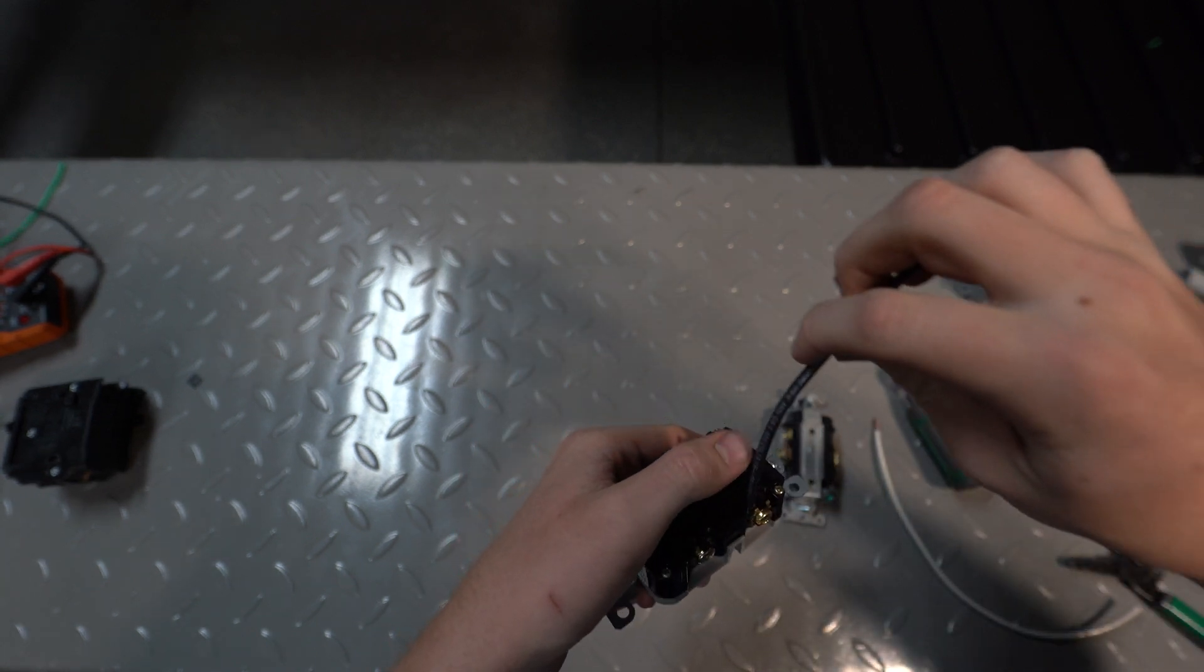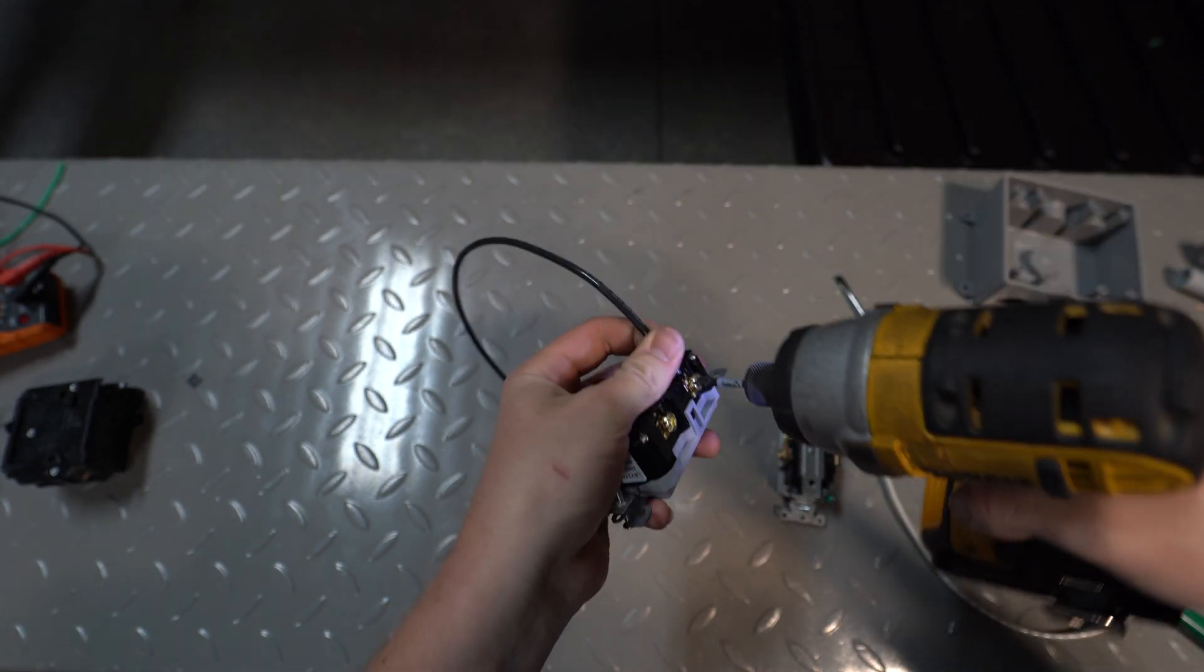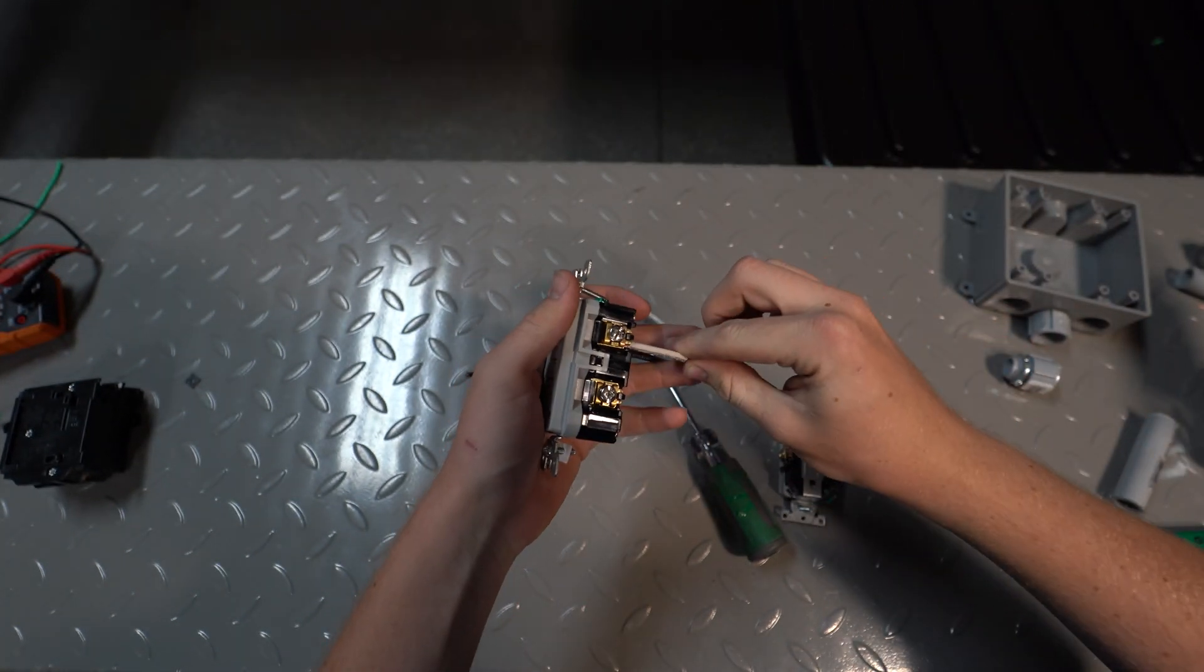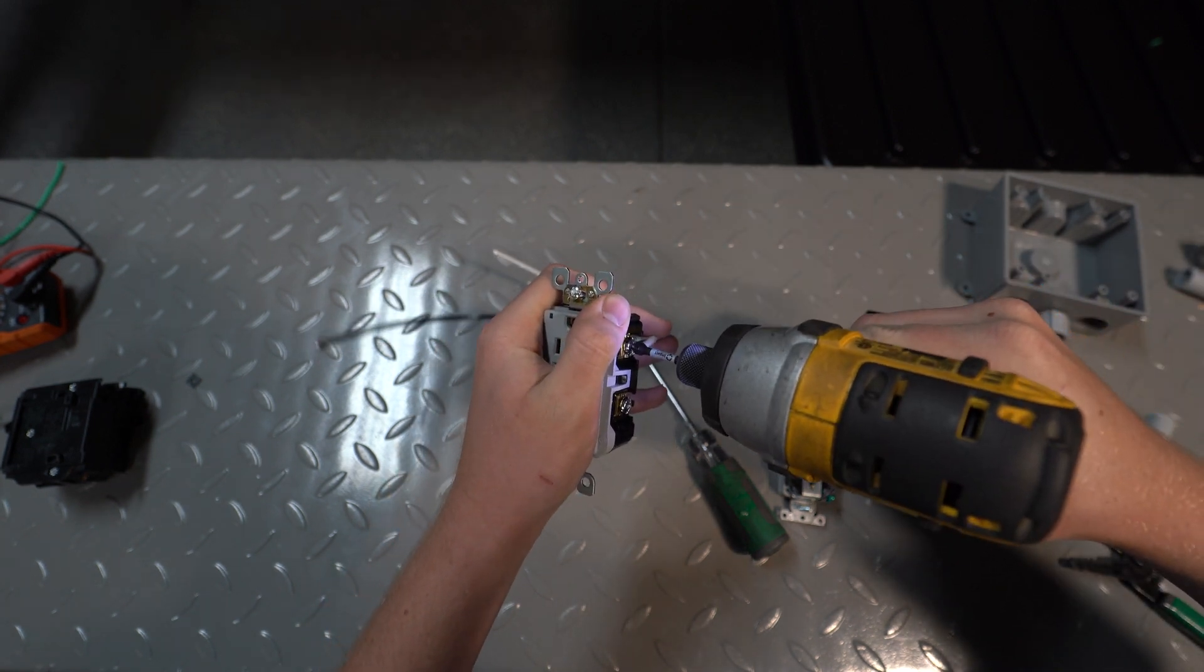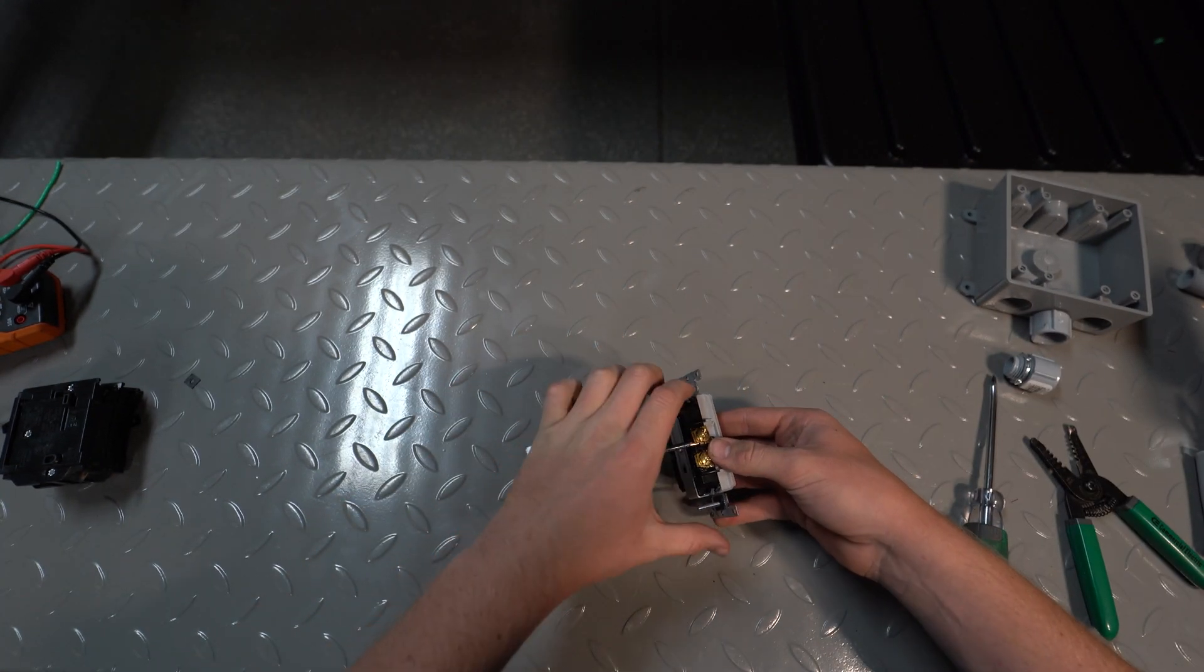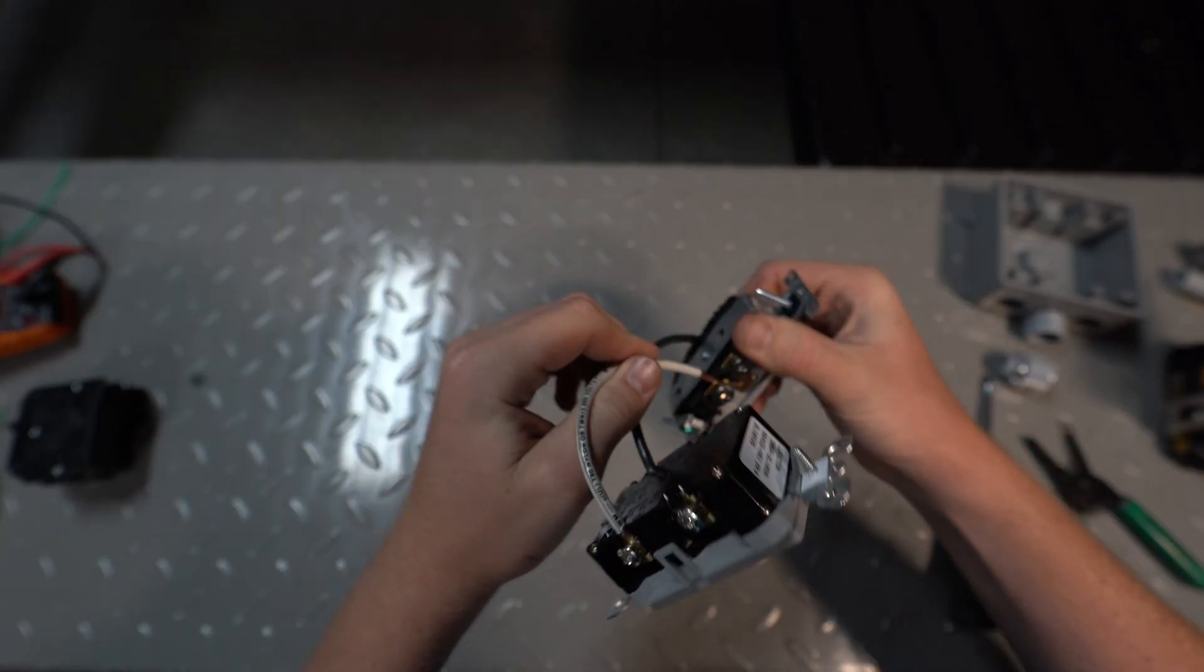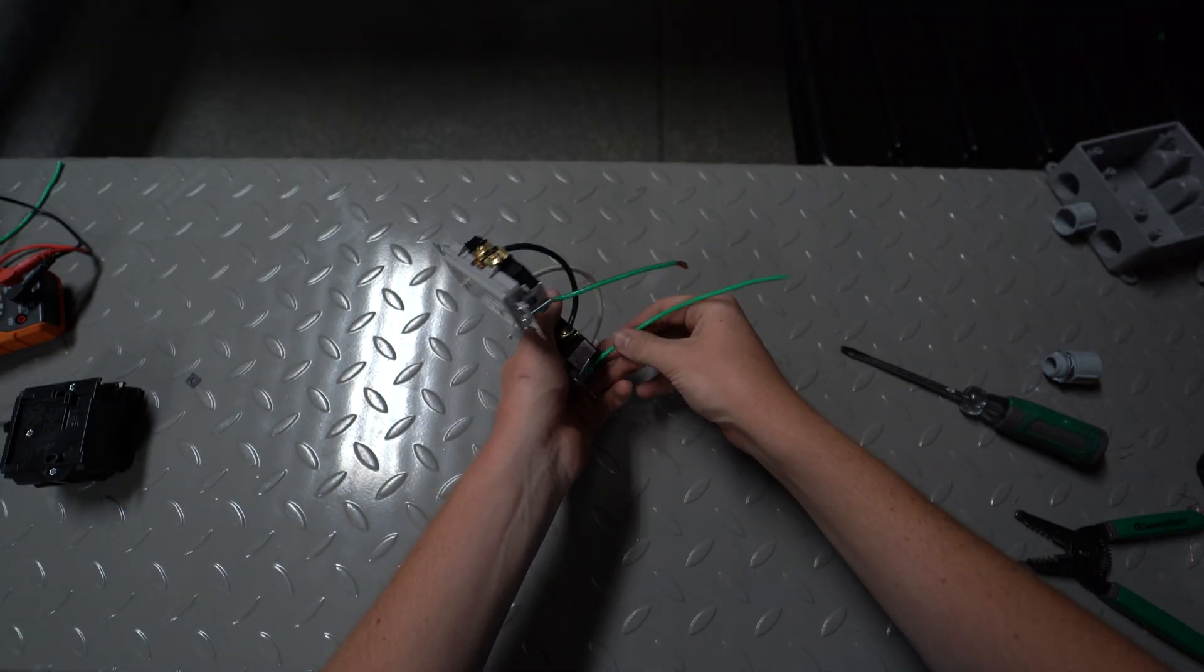Connect the black wire to the brass screw on the load side. Then connect the white wire to the silver screw on the load side. After connected, strip the two ends. Connect a grounding wire to each receptacle.